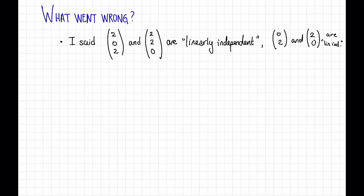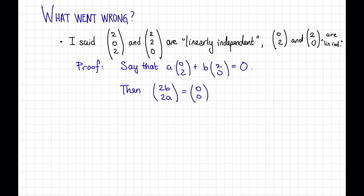For example, I said that the columns (2, 0, 2) and (2, 2, 0) were linearly independent, and I asserted that the columns, for example, (0, 2) and (2, 0) are linearly independent. So if we forget for a second that we're working mod 4, this seems pretty reasonable. This is not a scalar multiple of that, this one's not a scalar multiple of that.